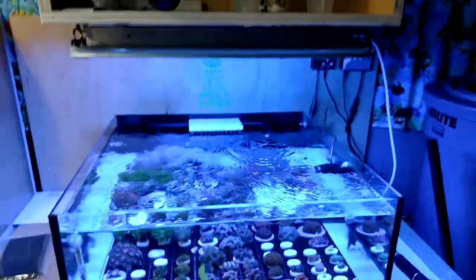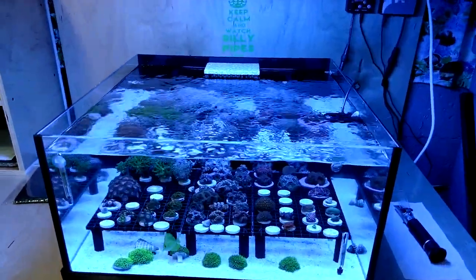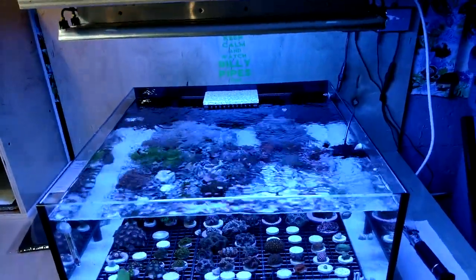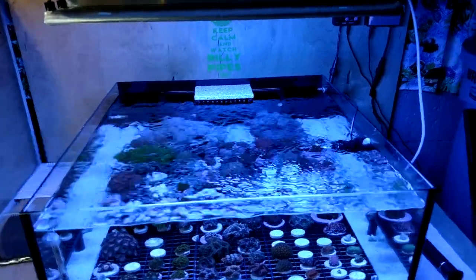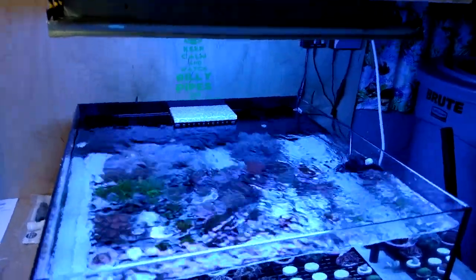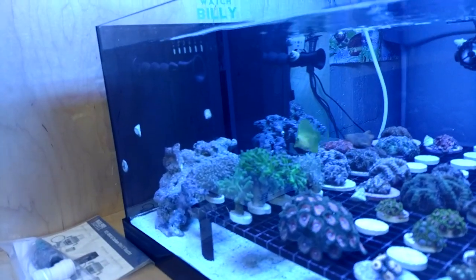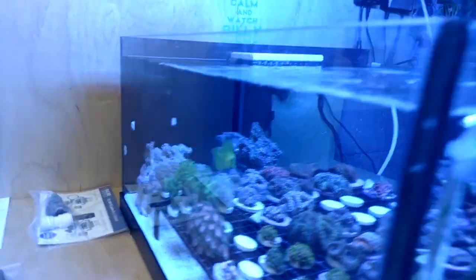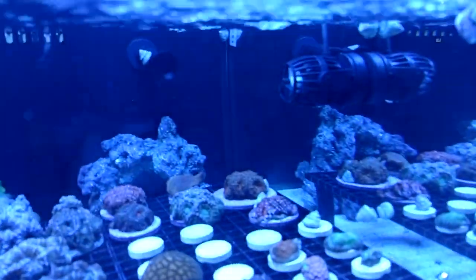We will start at the top. The only thing that I'm running in here is the basic overflow box that I got from eBay, and two half inch return nozzles that are running RFGs on them. I've got two RFG nozzles there.